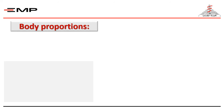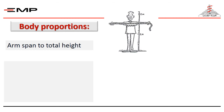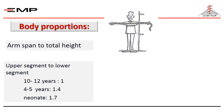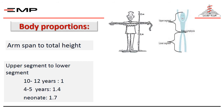After measuring the height, you have to determine if the child's body is proportionate or not. To do so, we measure the arm span in relation to the height — they should be equal in all age groups. We also measure the upper segment in relation to the lower segment. The upper segment is from the head to the symphysis pubis, and the lower segment is from the symphysis pubis to the toes. In adults, the upper segment is equal to the lower segment, but in neonates it is 1.7 to 1. Around 4 to 5 years it is 1.4 to 1, and at about 10 to 12 years they are equal as in adults.